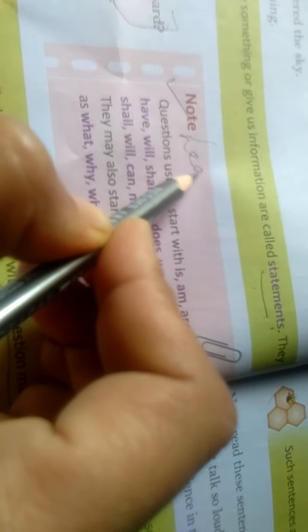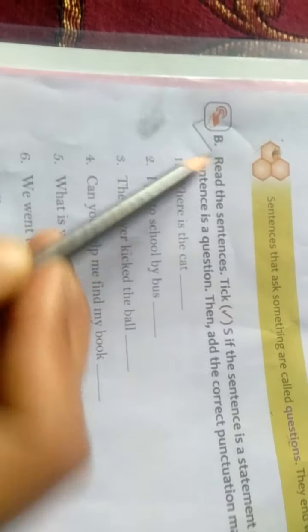So students, you have to learn it. We are going to do exercise B. Read the sentences. Tick S if the sentence is a statement and Q if the sentence is a question. Then, add the correct punctuation mark. So students, in this exercise, what we have to do? Jo sentences hume statement bata raha hai, wahan pe hum S ke aage tick karenge aur jo question bata raha hai, wahan Q wale box ke aage tick karenge. Also, hume yahan pe correct punctuation marks bhi dene hai.